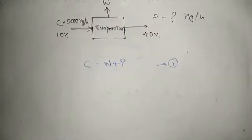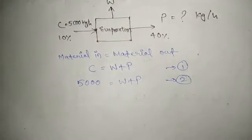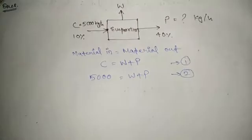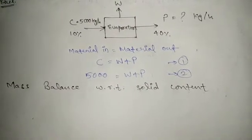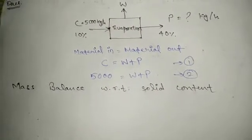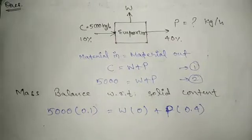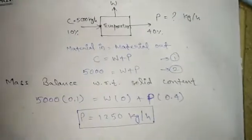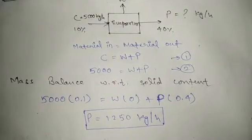The amount of C is 5,000 kilograms per hour, so we write: 5,000 = W + P (equation 2). Now writing the mass balance with respect to solid content: the concentration of C is 10 percent, the concentration of P is 40 percent, and the concentration of water is zero. From this equation we can find the value of P, and putting that value into equation 2 gives us the value of W.